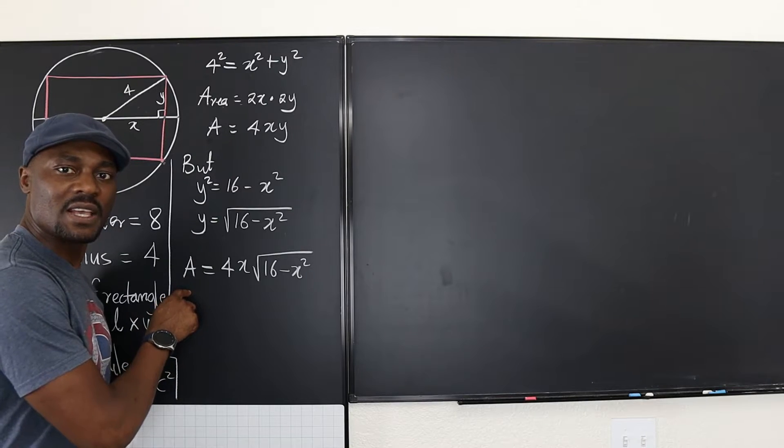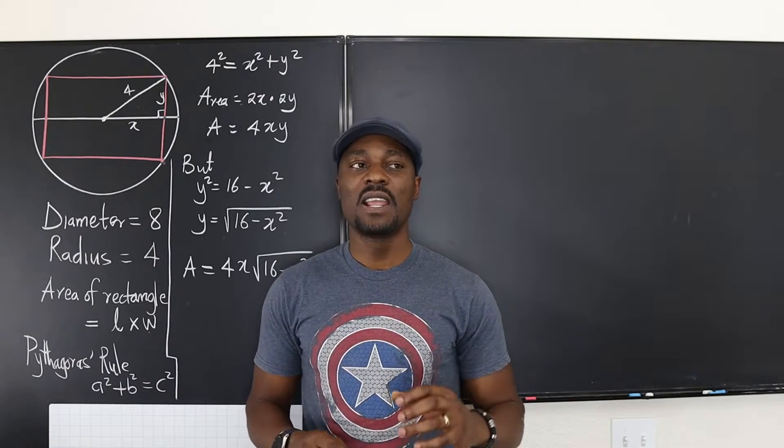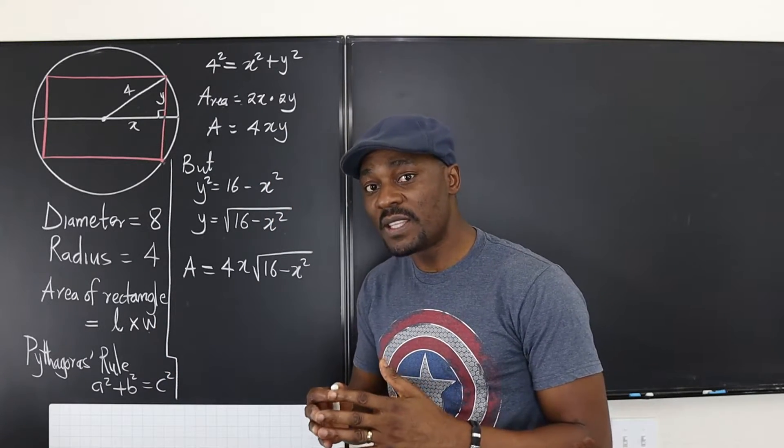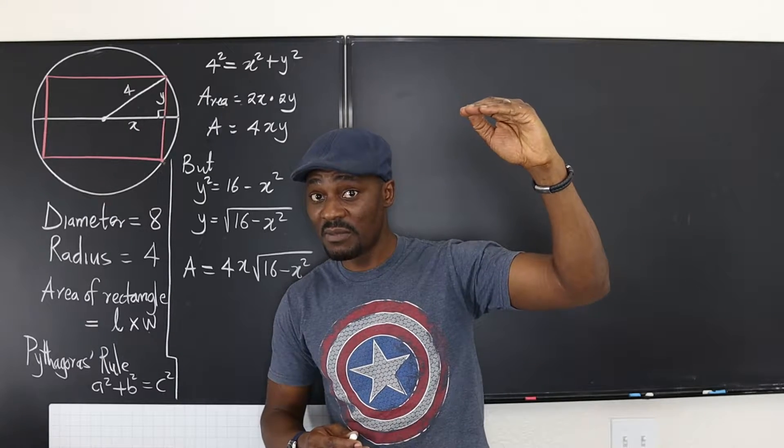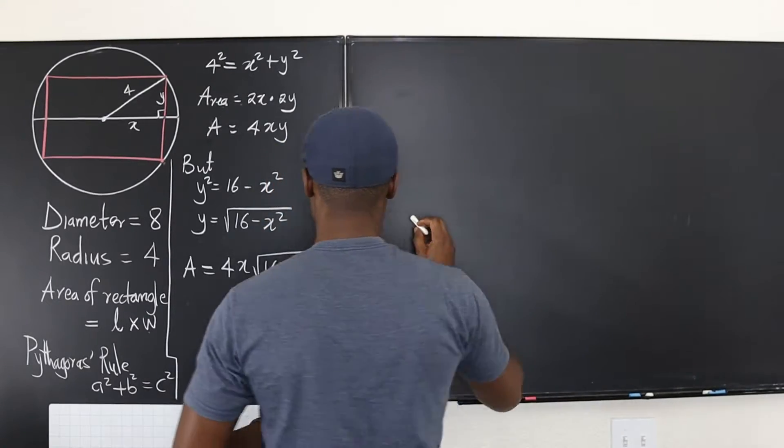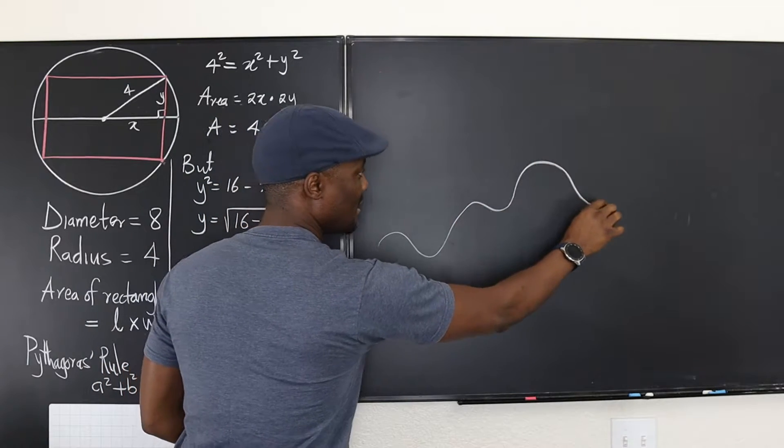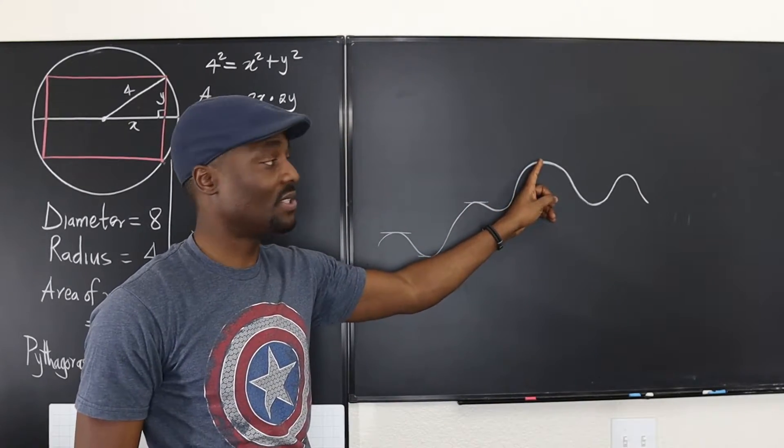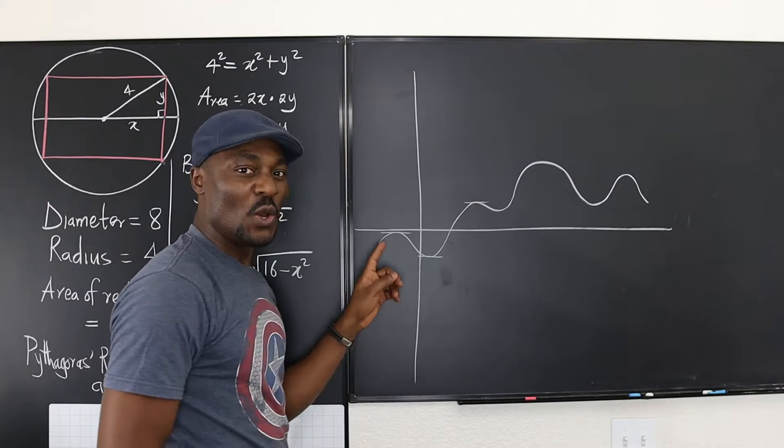So where are we going with this? You can't solve this because you don't know what A is. However, the optimization principle that we're talking about says that at the maximum or the minimum of a function, the derivative is always equal to zero. If there is a maximum, a local maximum or a local minimum, an absolute maximum or an absolute minimum, you always have the derivative, the rate of change at that point to be equal to zero.